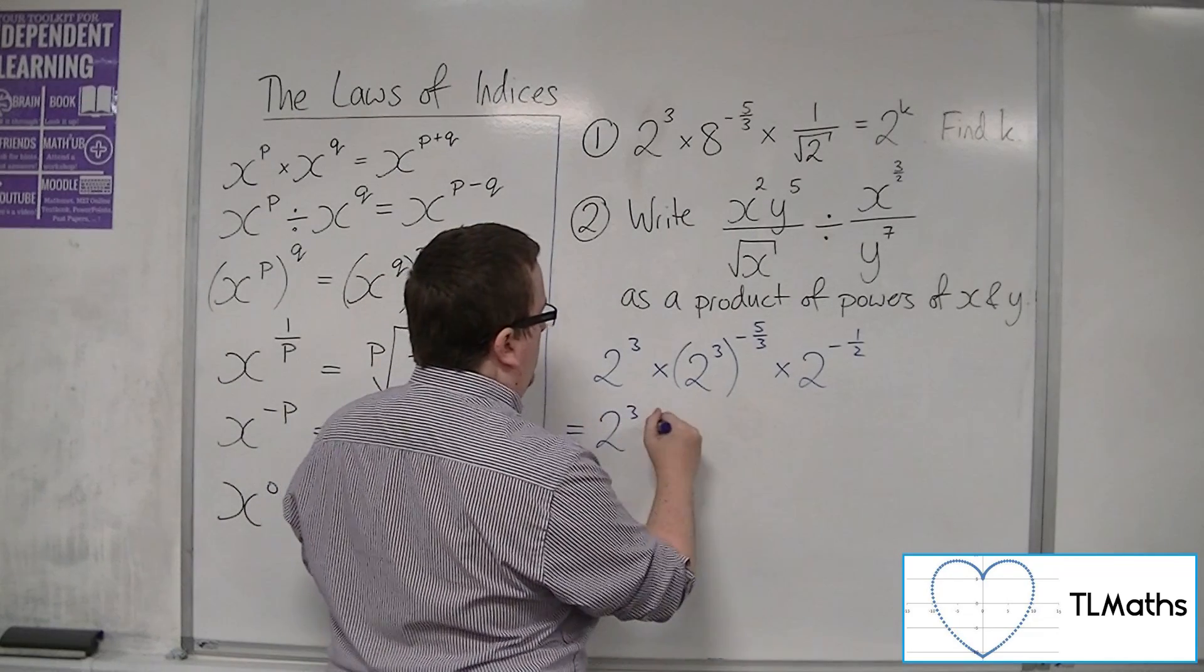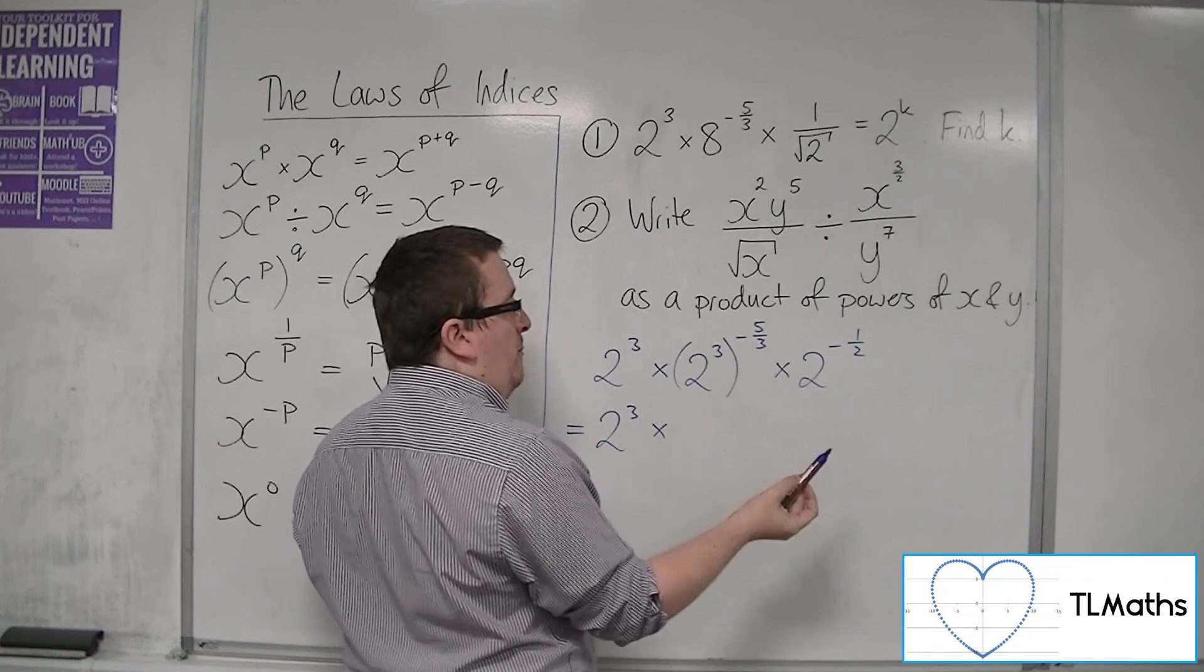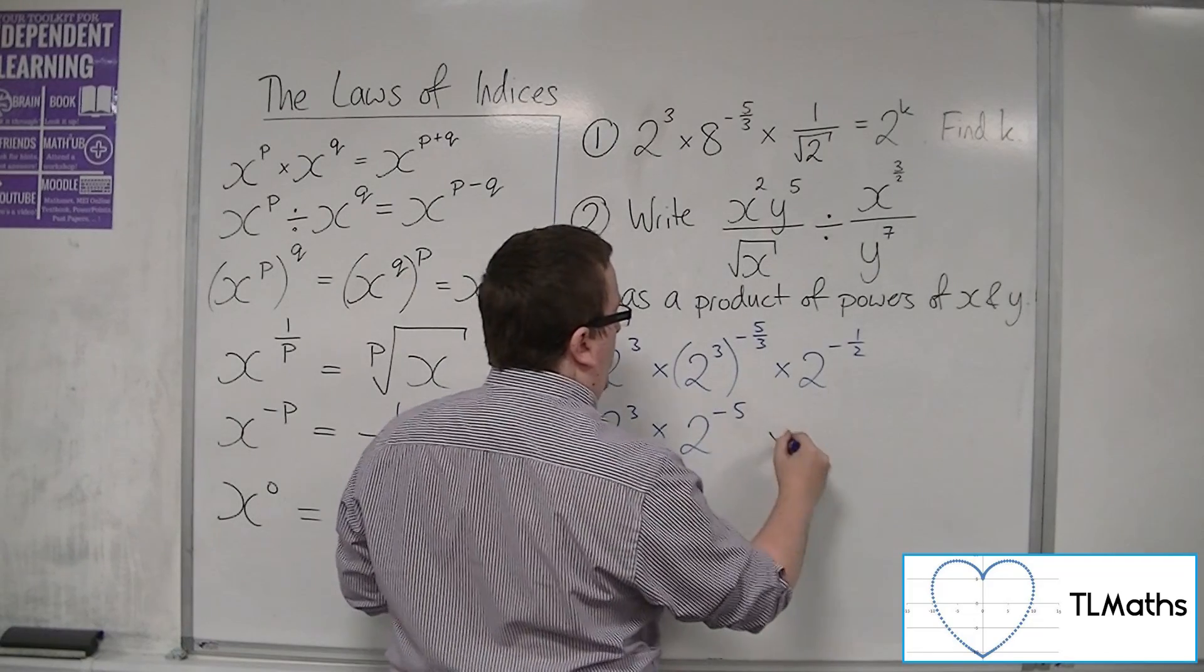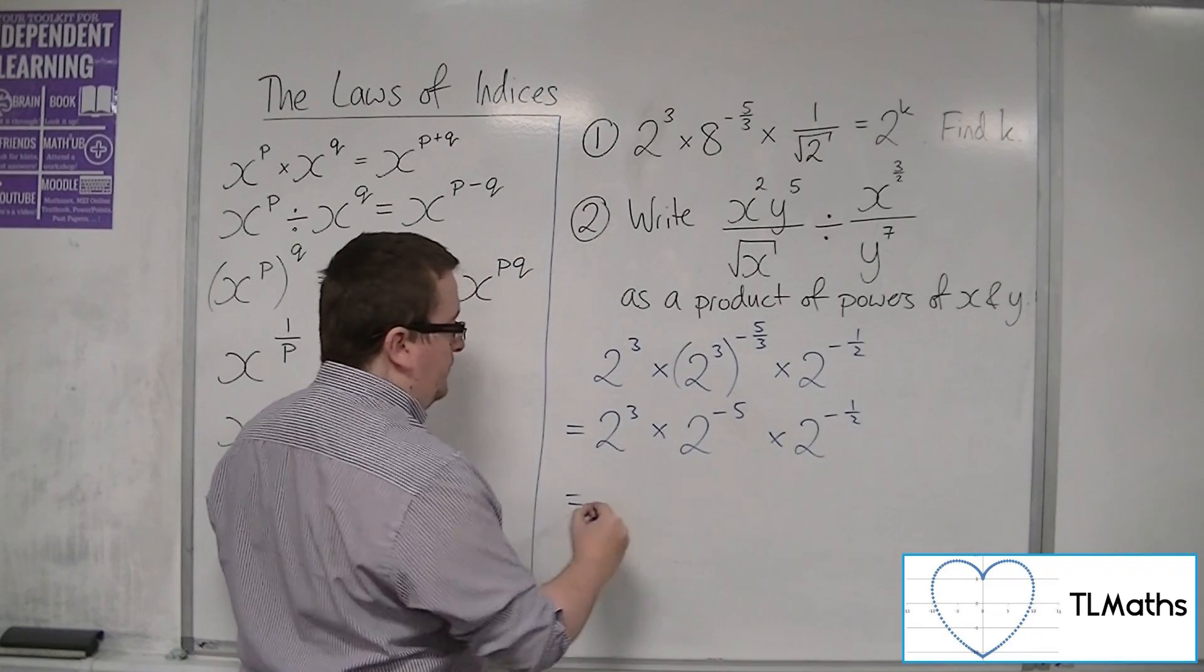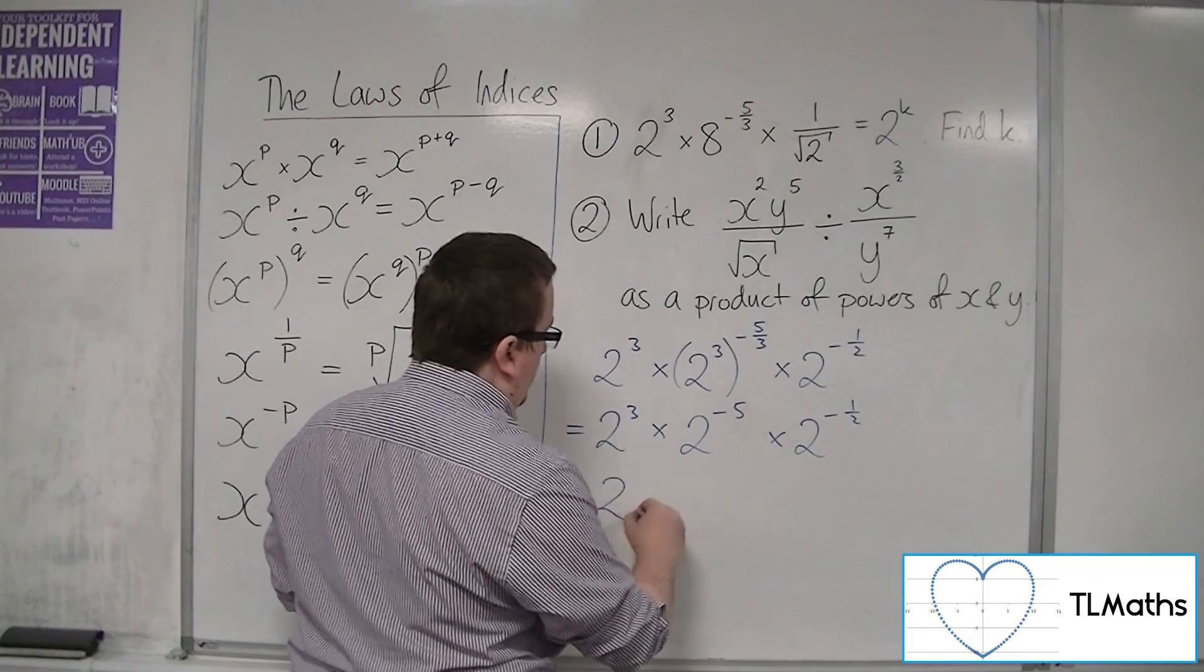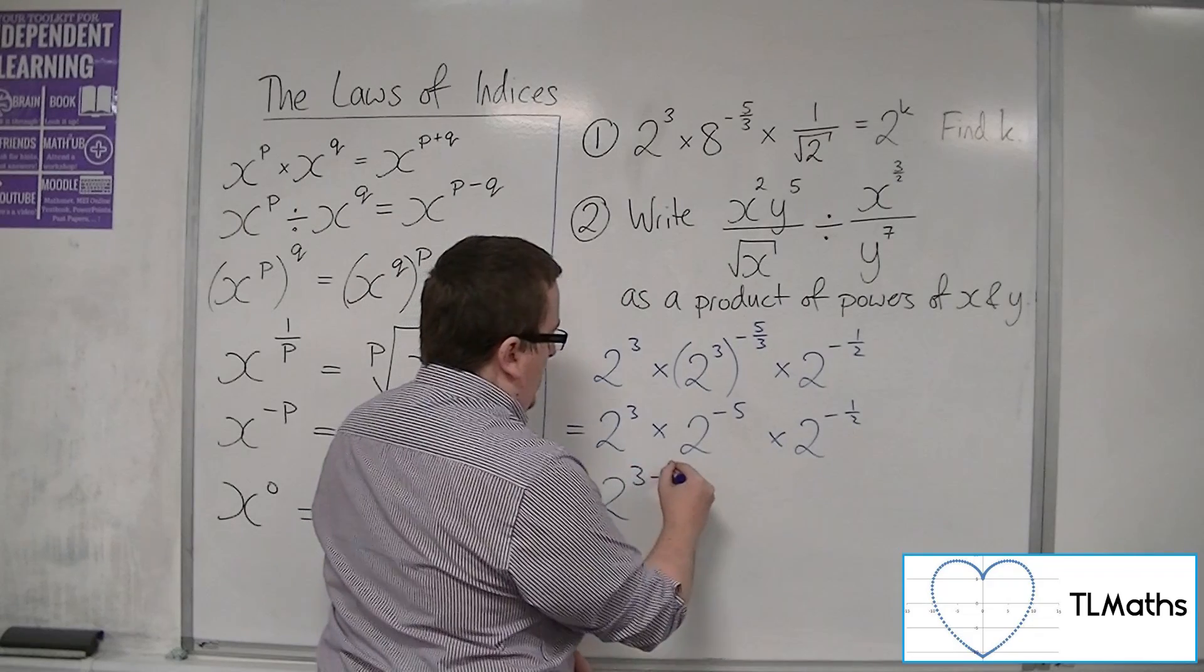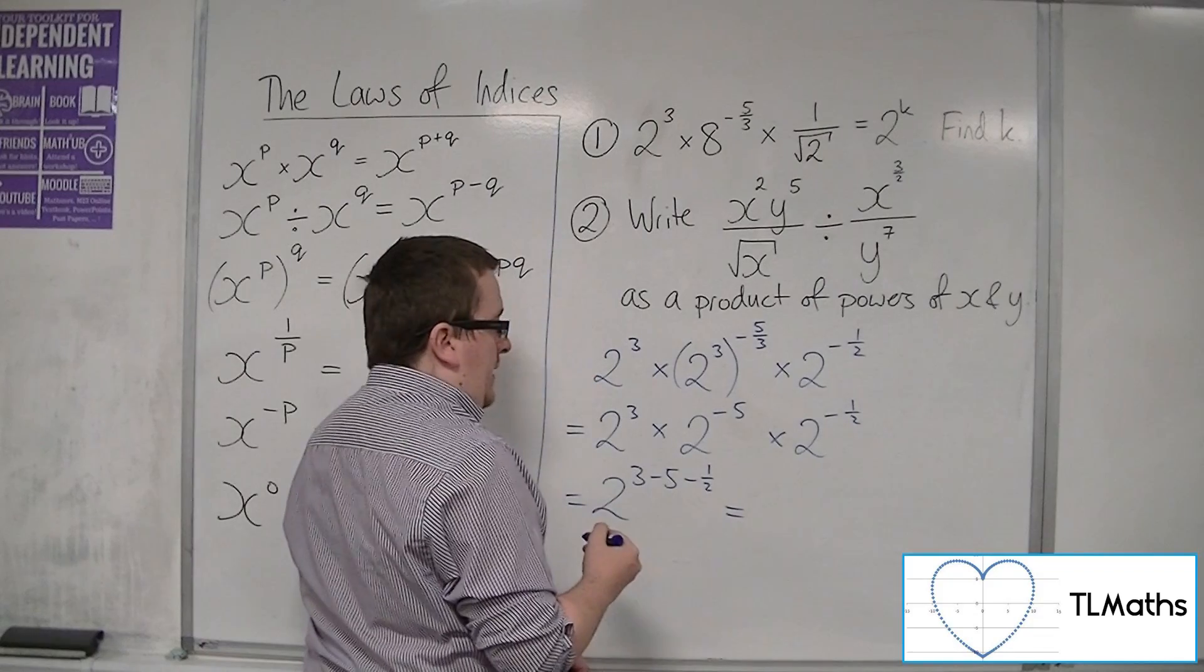Now that 2 cubed can stay the same. These powers multiply together, so 3 times minus 5 thirds is minus 5. We've got 2 to the minus 5 and 2 to the minus 1 half there. Using this law of indices, I can add the powers because the base numbers are the same. So we've got 3 take away 5 take away 1 half, and I need to work out what that is.